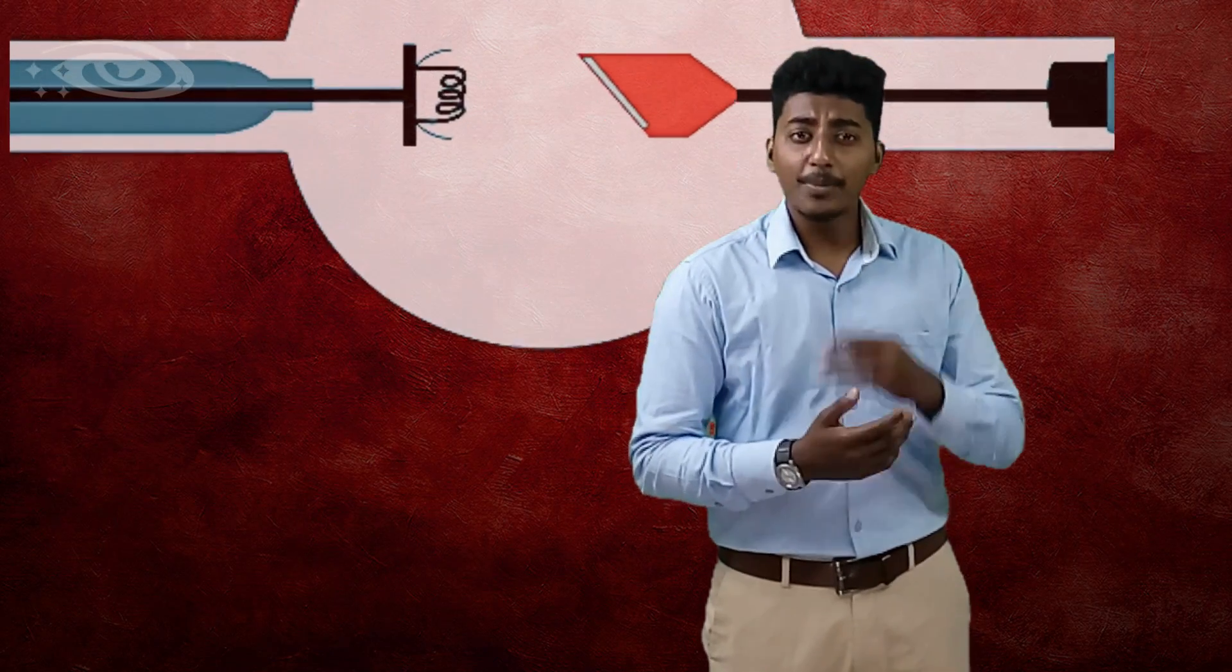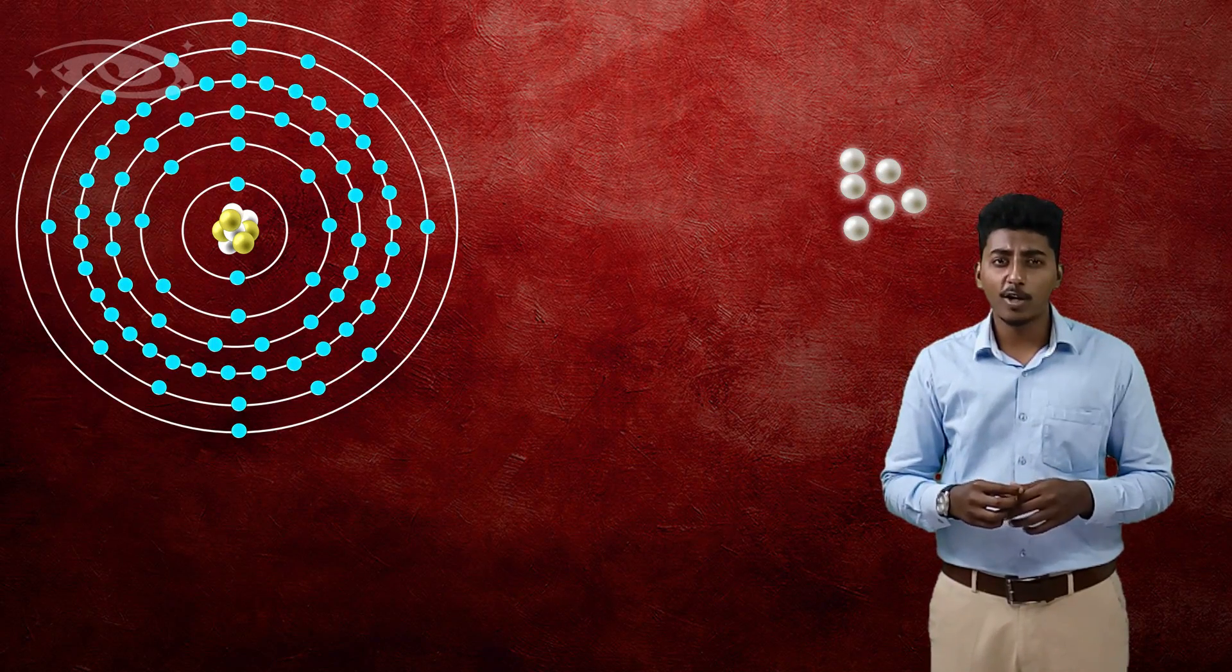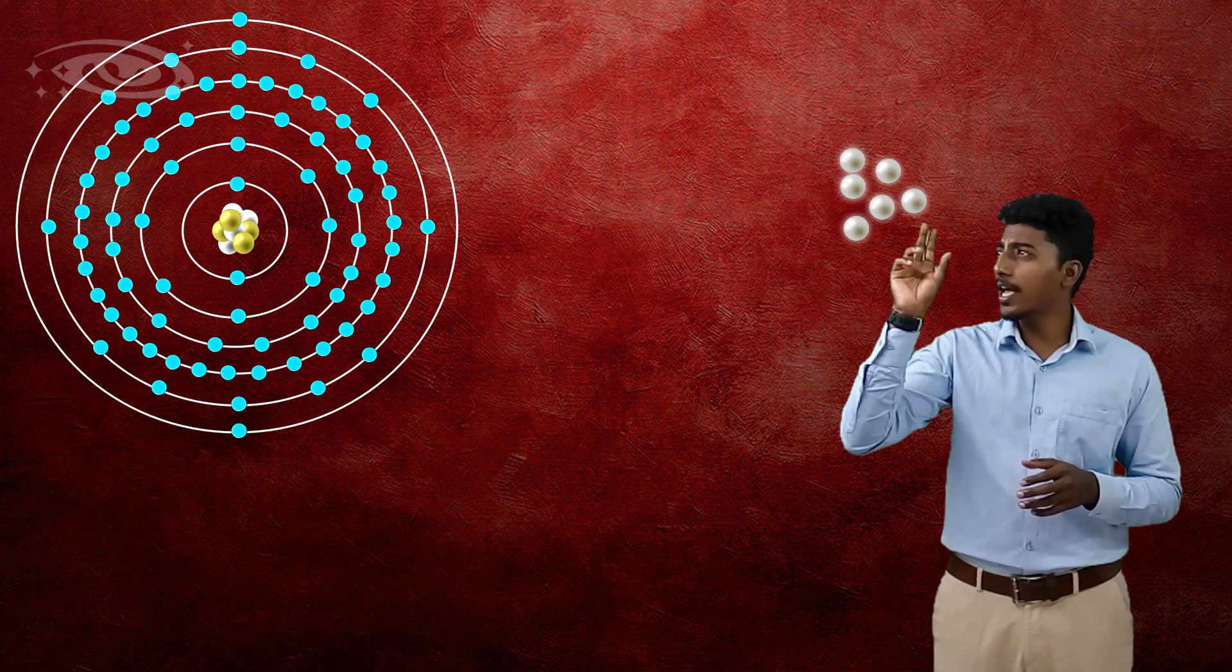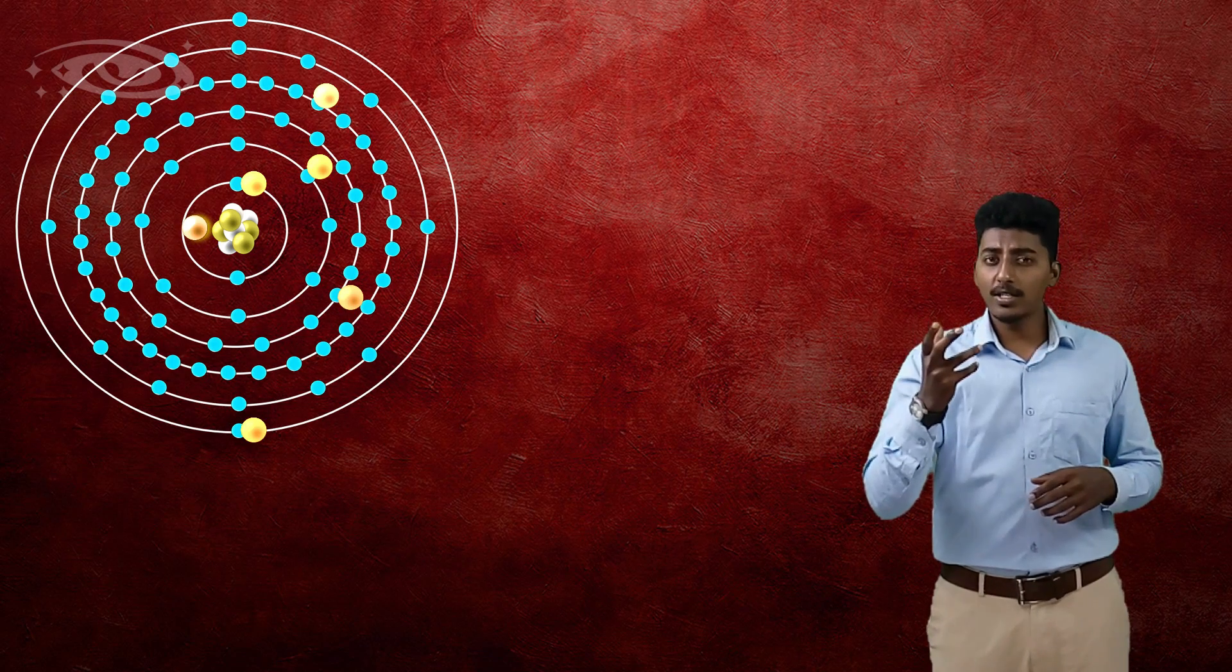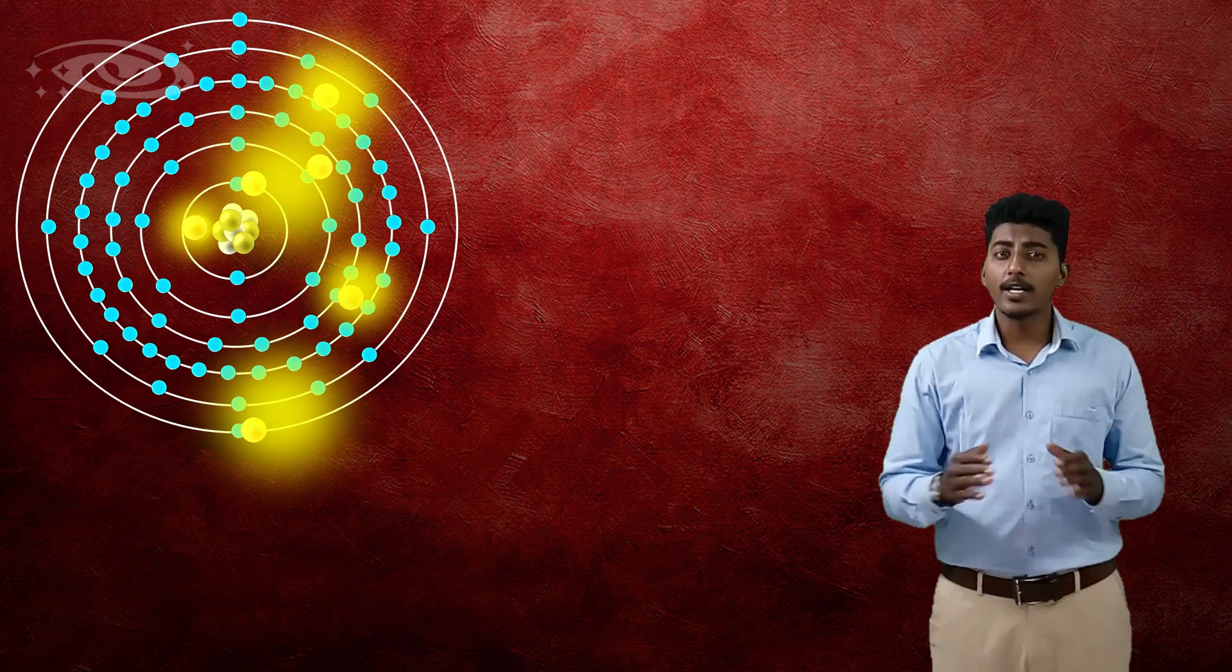For better understanding, let me pick a single atom from the target metal and show it out here. Now, some amount of high velocity electrons which arrived from the filament go and interact with the atom.